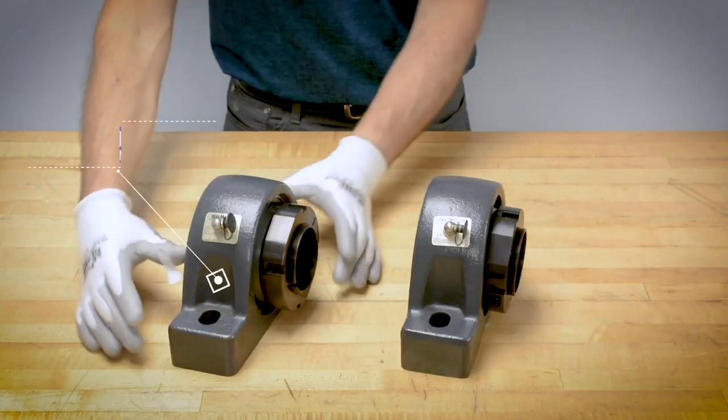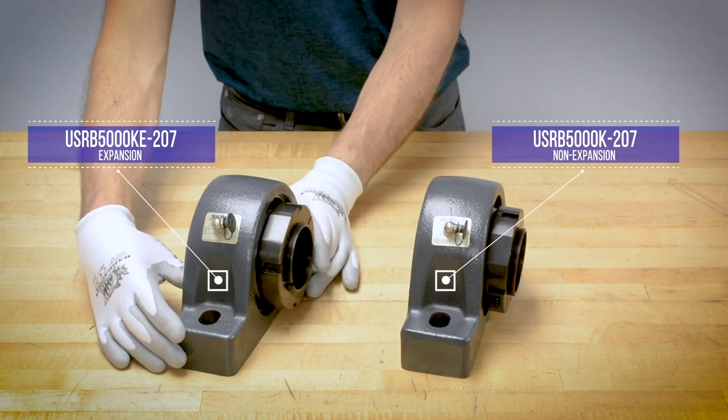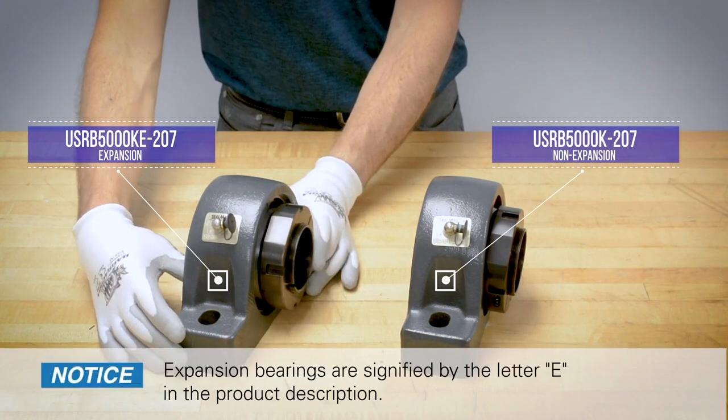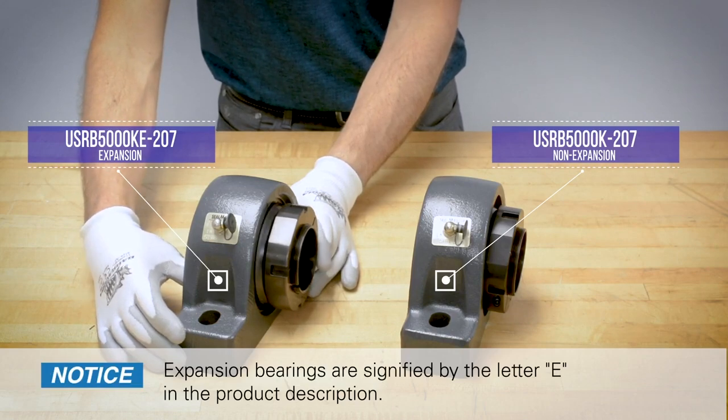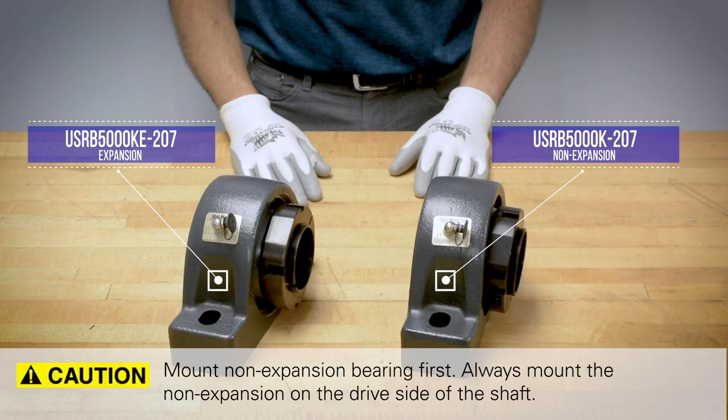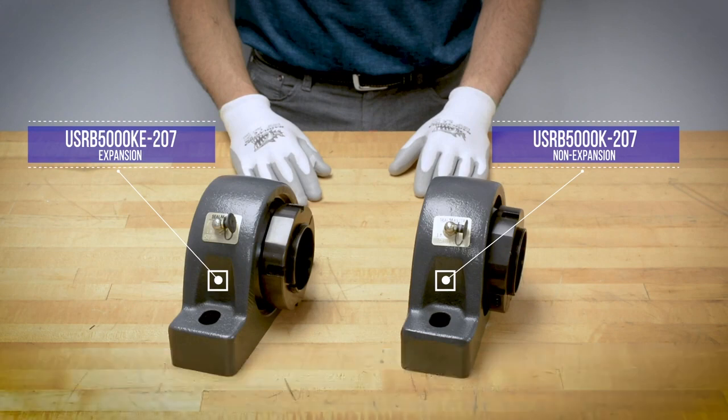SealMaster USRB bearings come in expansion and non-expansion versions to accommodate shaft axial movement from thermal expansion or during adapter lock installation. It is recommended to use one non-expansion and one expansion bearing when installing USRB bearings with clamp lock adapter lock.